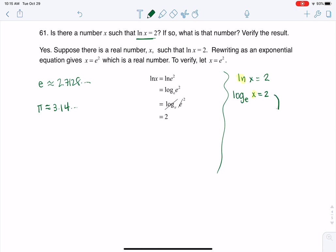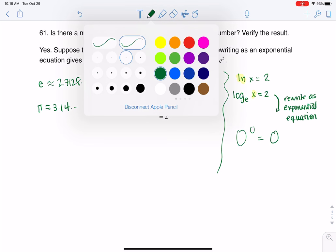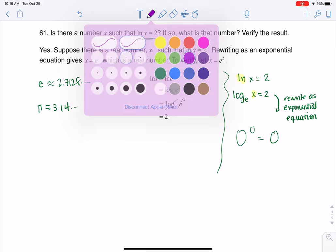So if I want to rewrite as an exponential equation, that means there are basically three circles I have to fill in. One, two, and three. So let me change pen colors and then I'll clean this up once we're done with it.